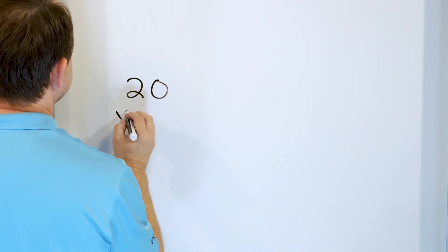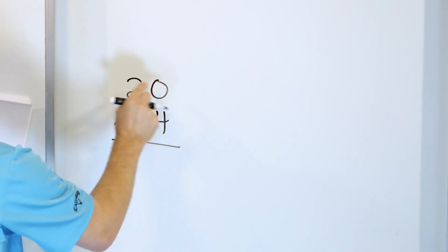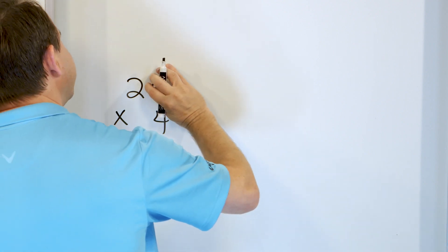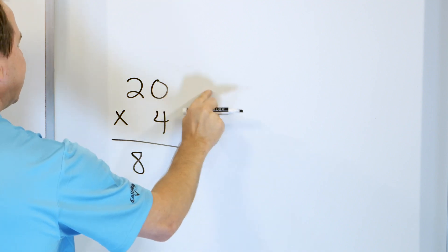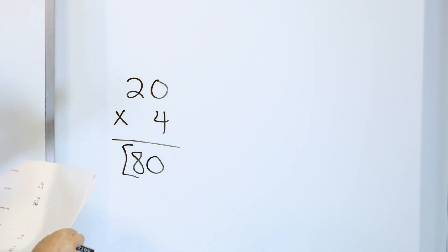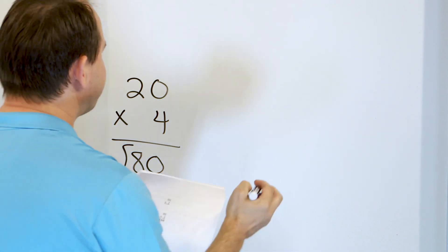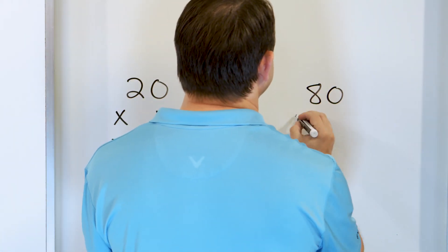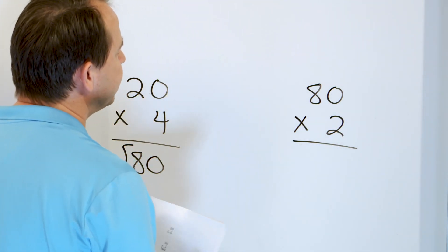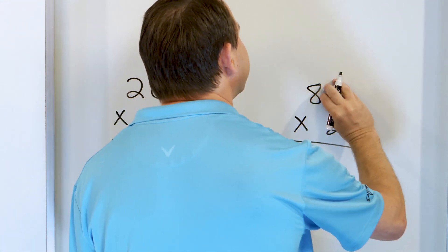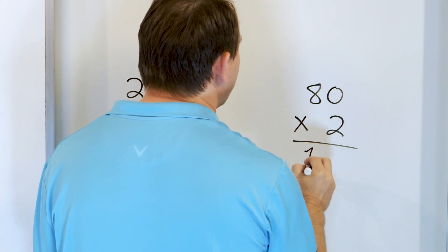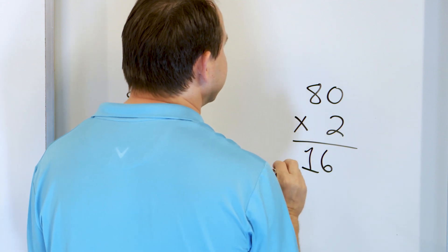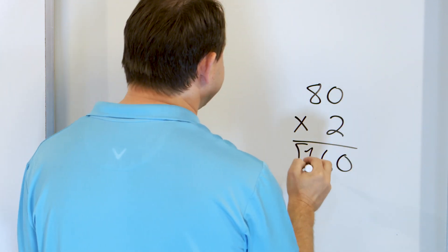What is 20 times 4? I'm multiplying by a multiple of 10, so I'll cover up the 0. What's 2 times 4? That's 8. Take that 0 and stick it on the end, and 20 times 4 is 80. Our last problem: what is 80 times 2? I'm multiplying by a multiple of 10, so take away that 0 and ask, what is 8 times 2? That's 16. Stick the 0 on the end — 160. So 80 times 2 is 160.